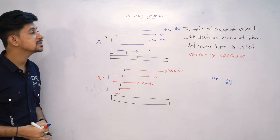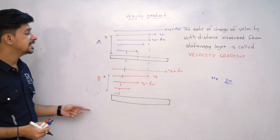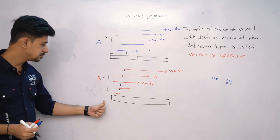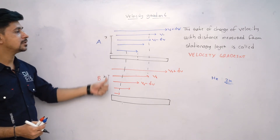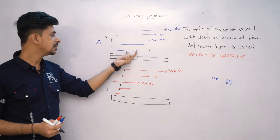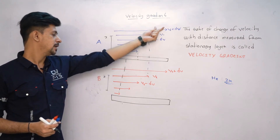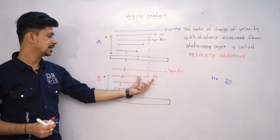So what is velocity gradient? It is this difference — the change in velocity, the velocity change.